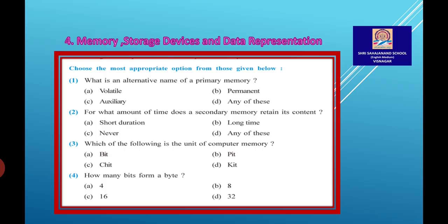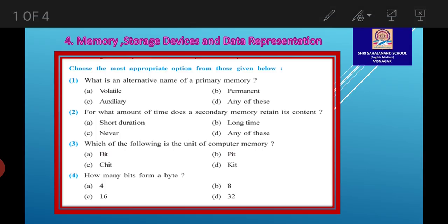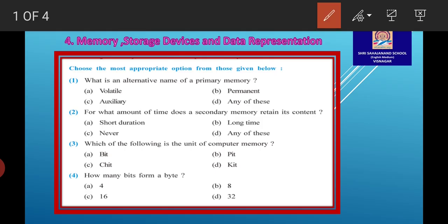Now first question is, what is an alternative name of a primary memory? Answer A, Volatile.